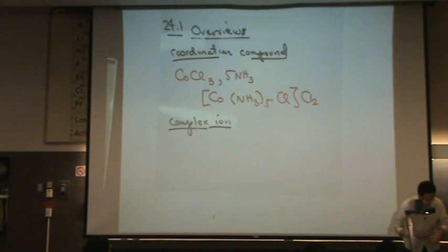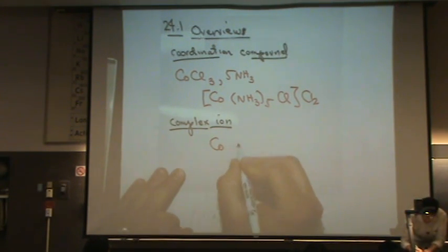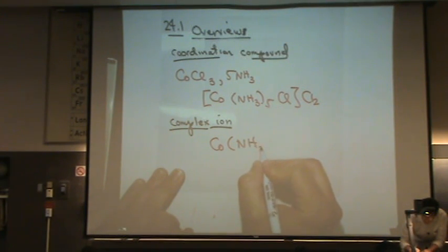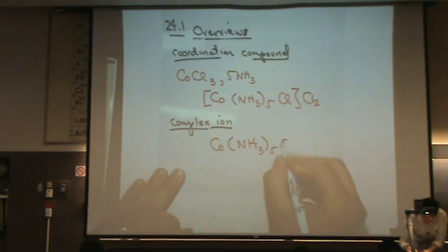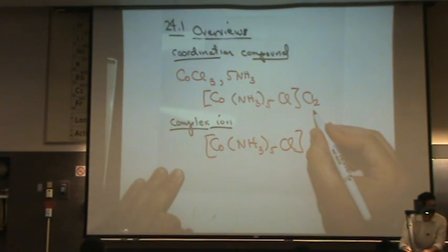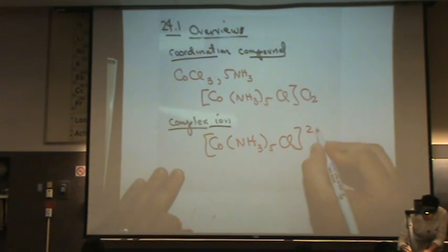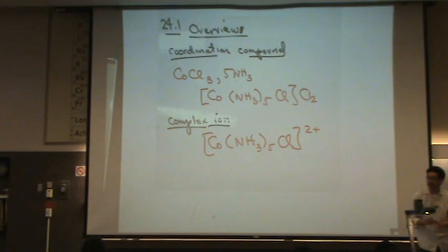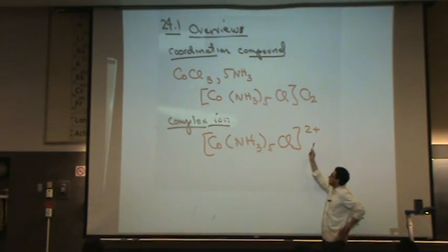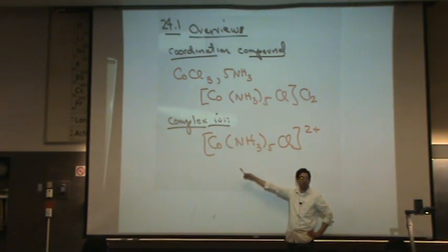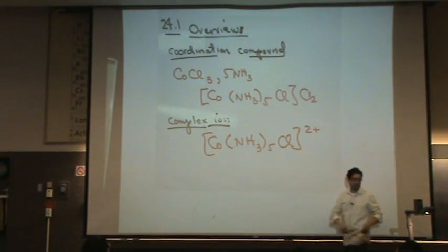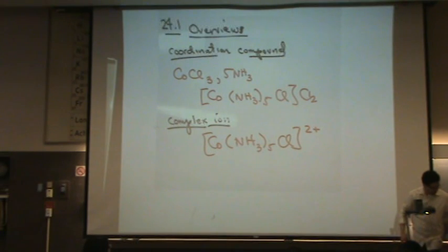Let me give you an example. If I take that same compound and rewrite it, but I remove the Cl2 and actually just write the ion — write it as a charged species — this is a complex ion. It's basically a transition metal entity that is charged.